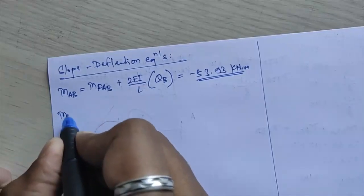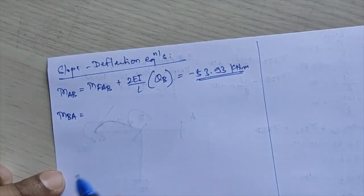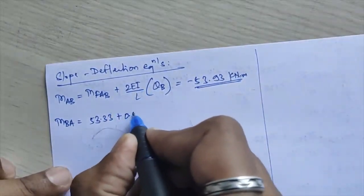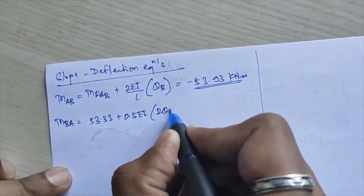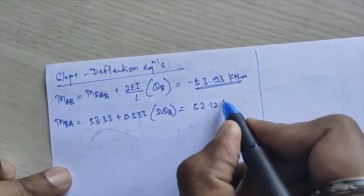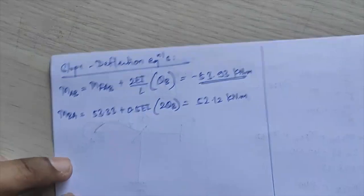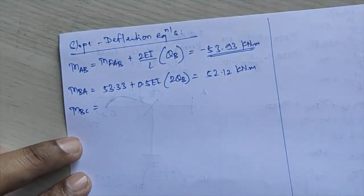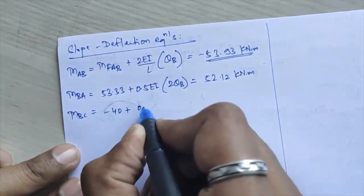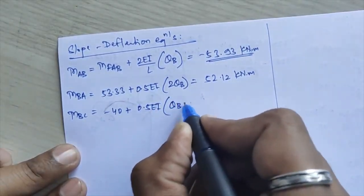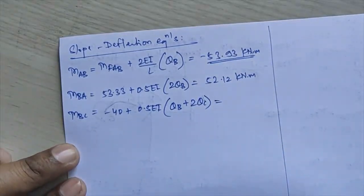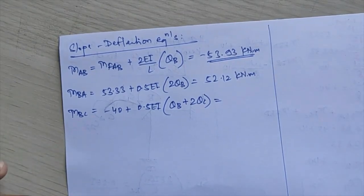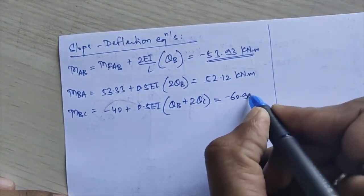MBA = MF_BA + (2EI/L)(2θB) = 53.33 + 0.5EI×2θB = +52.12 kNm. For MBC: MBC = MF_BC + (2EI/L)(2θB + θC) = −40 + 0.5EI×(2θB + θC) = −60.90 kNm.